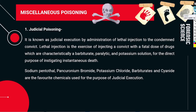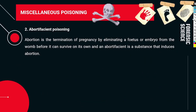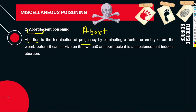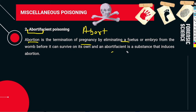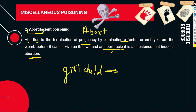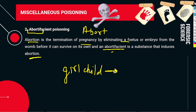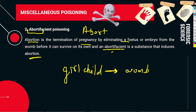Abortifacient poisoning involves substances that induce abortion — the termination of pregnancy by eliminating a fetus or embryo from the womb before it can survive on its own. Abortifacients are substances which induce abortion. For example, giving a pregnant woman abortifacient poison to kill the child in the womb. This constitutes a type of poisoning.